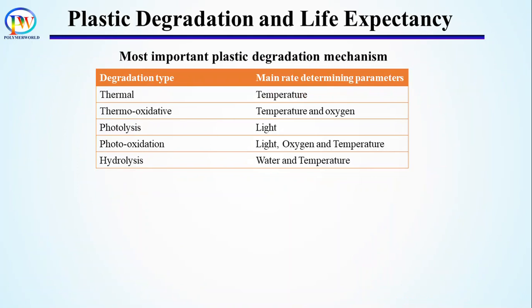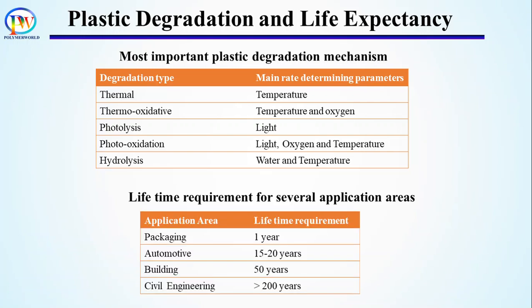Different degradation mechanisms of polymeric materials are shown here. In general, UV light and moisture lead to degradation of polymeric materials. As polymers are expected to survive several years — for example, in automotive applications, polymeric material is expected to retain its mechanical properties and appearance for more than 15 years, whereas in buildings it is expected to survive for more than 50 years.